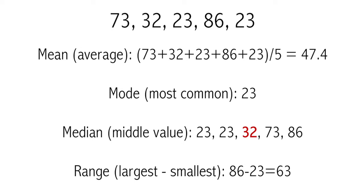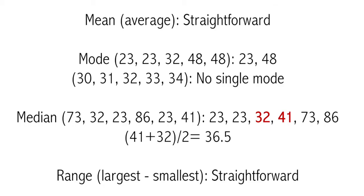Range is just the largest number minus the smallest number, so 86 minus 23, which comes to 63. There are some important special cases: the mean and range stay the same, but for mode, sometimes there are 2 modes — in this case both 23 and 48 appear most frequently (twice each), so both are modes. If all numbers appear only once, all are modes and therefore there is no single mode.